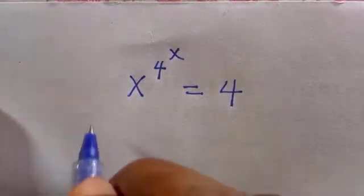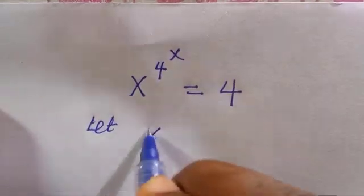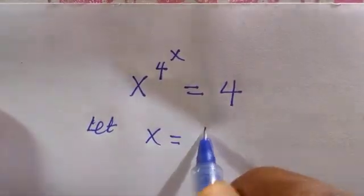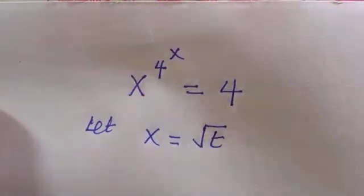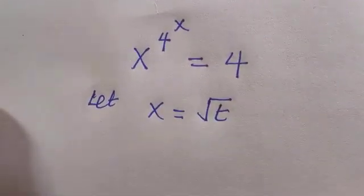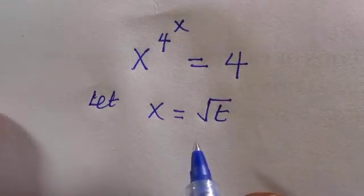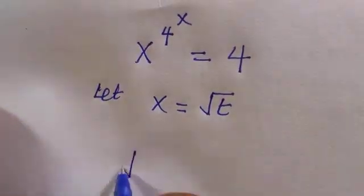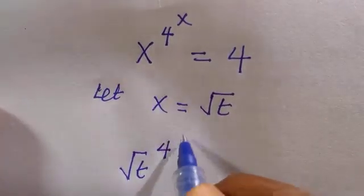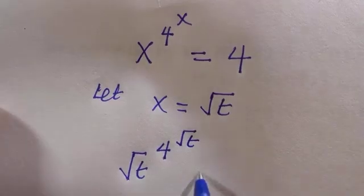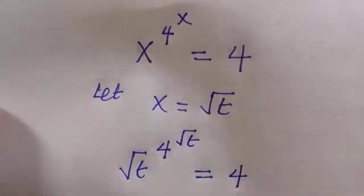We are required to find the value of x. In this problem we are going to let x equals root t. So the assumption here is anywhere we see x we'll replace it with t. Therefore we have root t raised to power 4 raised to power root t equals 4.